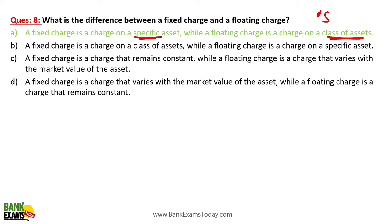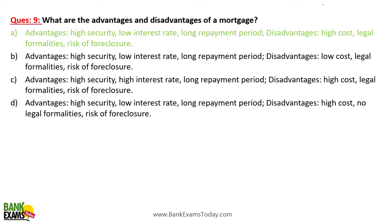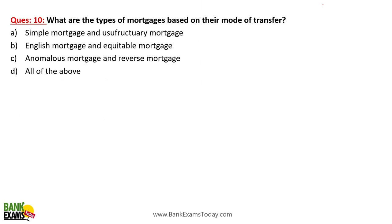Advantages and disadvantages of a mortgage: advantages include high security, low interest rate, and a long repayment period — housing loans are generally 20-30 years. Disadvantages: borrowers end up paying a lot of interest, there are many legal formalities, and risk of foreclosure is always there given the lengthy loan period. Types of mortgages based on their mode of transfer: simple mortgage, usufructuary mortgage, English mortgage, equitable mortgage, anomalous mortgage, and reverse mortgage.